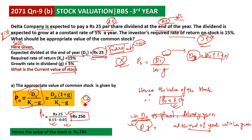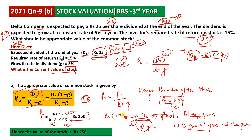To summarize: if D0 is given (past or present), then D1 equals D0 into (1 plus g) to the power 1, which simplifies to D0 times (1 plus g). Use this adjusted D1 in the formula.